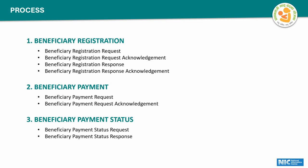The process is divided into eight steps, which are basically grouped into three main parts. The first is beneficiary registration, the second is payment request, and the third is payment status request. The first part is subdivided into four sub-steps, starting with sending a request to PFMS.